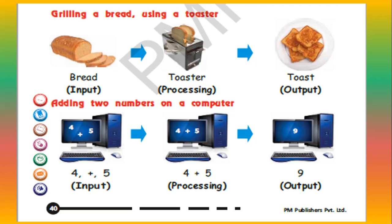Same is the case with the computer. Suppose we want to add two numbers — for example, 4 plus 5. The numbers 4 and 5 are the input. The computer will add them, so the computer is working like a processor. And what we get is 9 — 9 is the output.